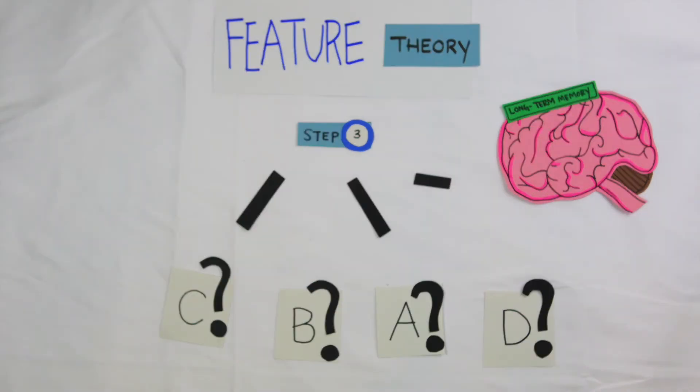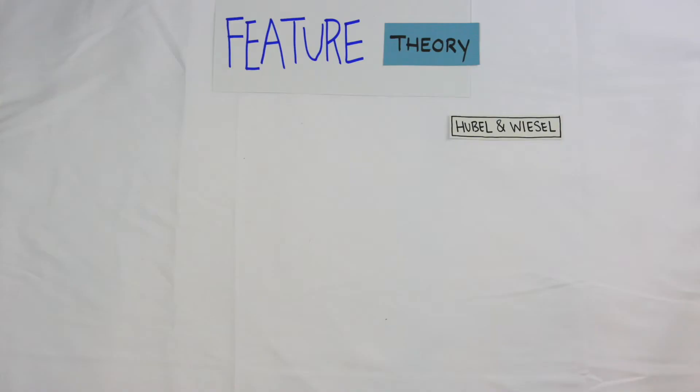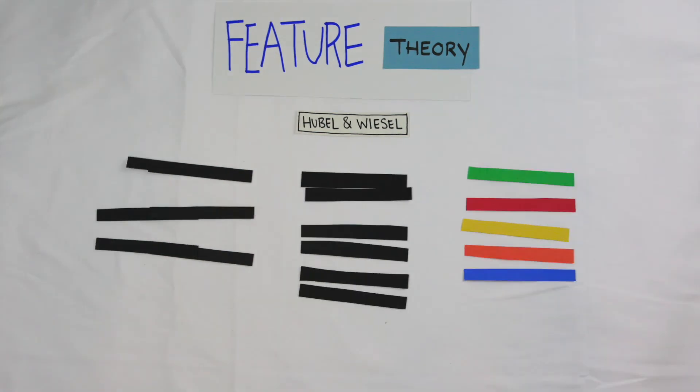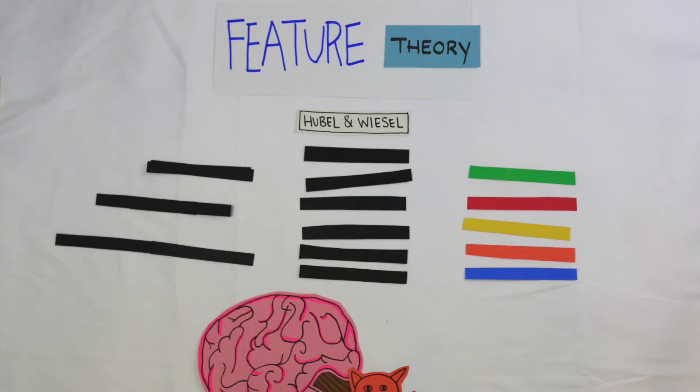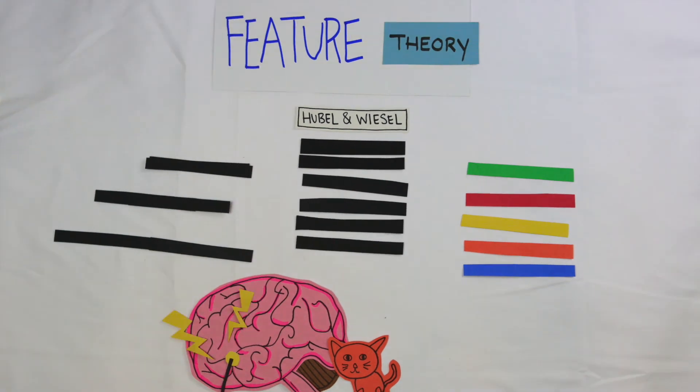Physiological studies have supported this theory, like an experiment conducted by Hubel and Wiesel. They used simple features such as length, movement, or color of bars and recorded activity in cat brains. They found that there are specific neurons that responded to each of those characteristics individually.